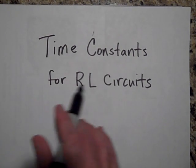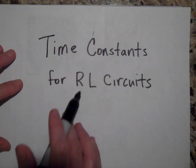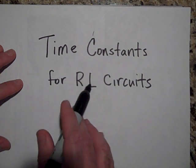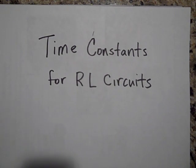Okay, this video is on time constants for RL circuits. An RL circuit is a circuit that has a resistor and an inductor in series with one another, and there can either be a battery or not be a battery.